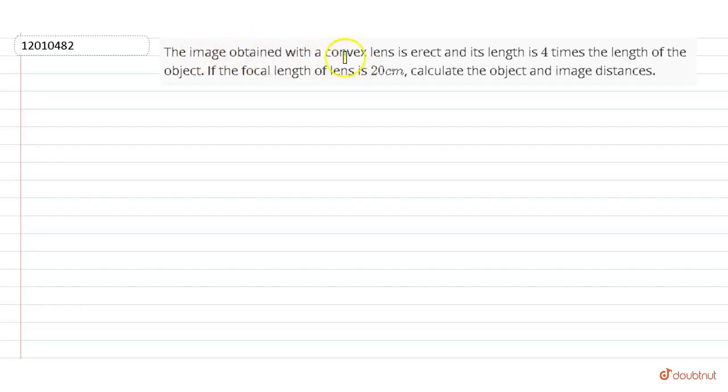The image obtained from a convex lens is erect and its length is 4 times the length of the object. If the focal length of the lens is 20 cm, calculate the object and the image distance. What we have said is that our image is 4 times the size of the object.